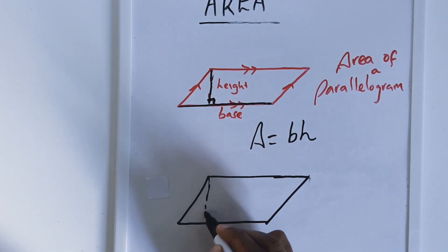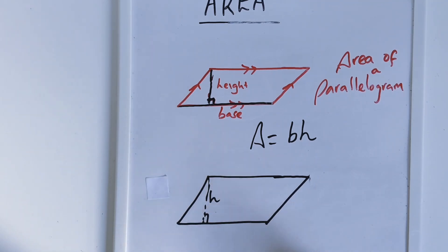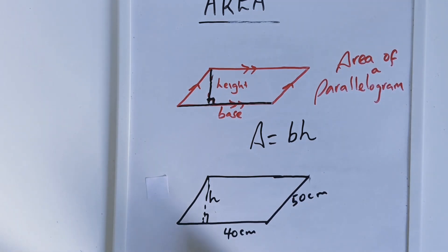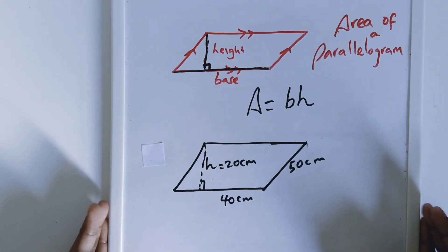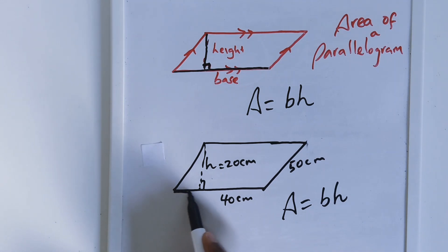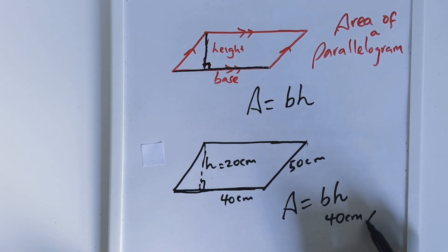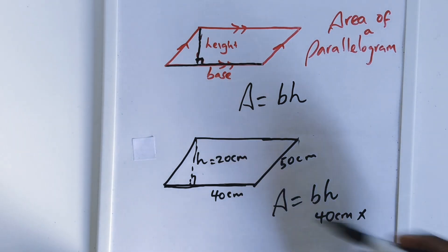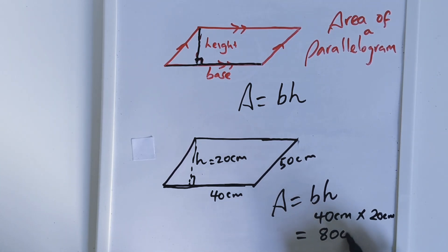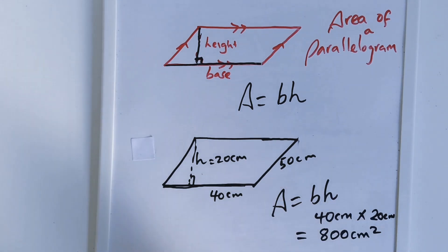That is the perpendicular line, which is the height. I have this side to be 40 cm, that side 50 cm, and the height here to be 20 cm. In order to find the area, we say area of a parallelogram is base times height. The base is 40 cm multiplied by the height of 20 cm, which gives 800 cm squared.